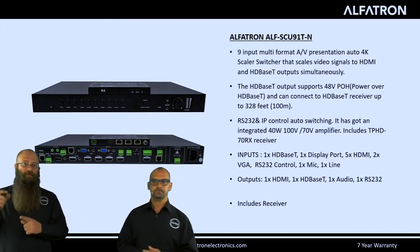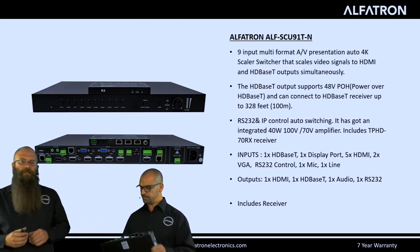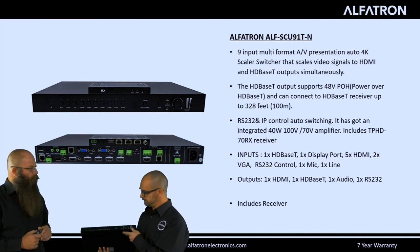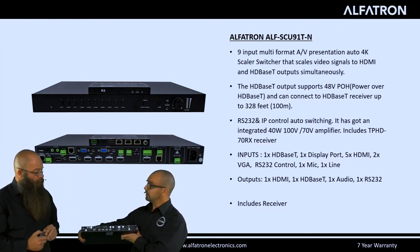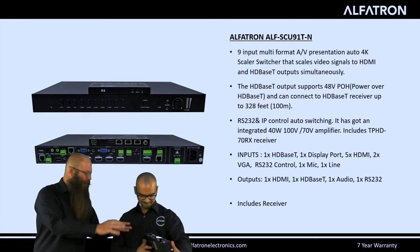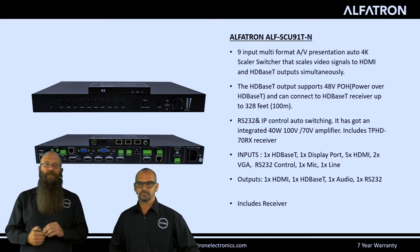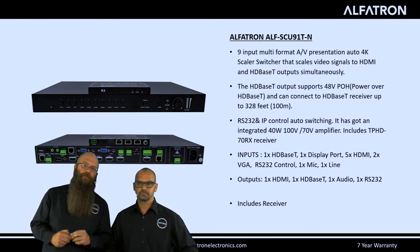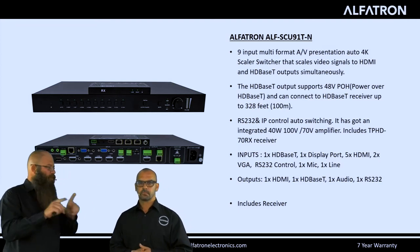Moving on to the SCU91. It's a nine-input switcher scaler ranging from HDMI to legacy VGA, and supports HDMI and HDBaseT output simultaneously, just like the previous product. The same selected signal is outputted on both HDMI and HDBaseT — it is a single output signal distributed through two channels. It has multiple HDMI inputs, legacy VGAs with audio, an HDBaseT input, and a DisplayPort input. The HDBaseT input is great for receiving a far-end source, for example from a pulpit, without needing an additional conversion box.